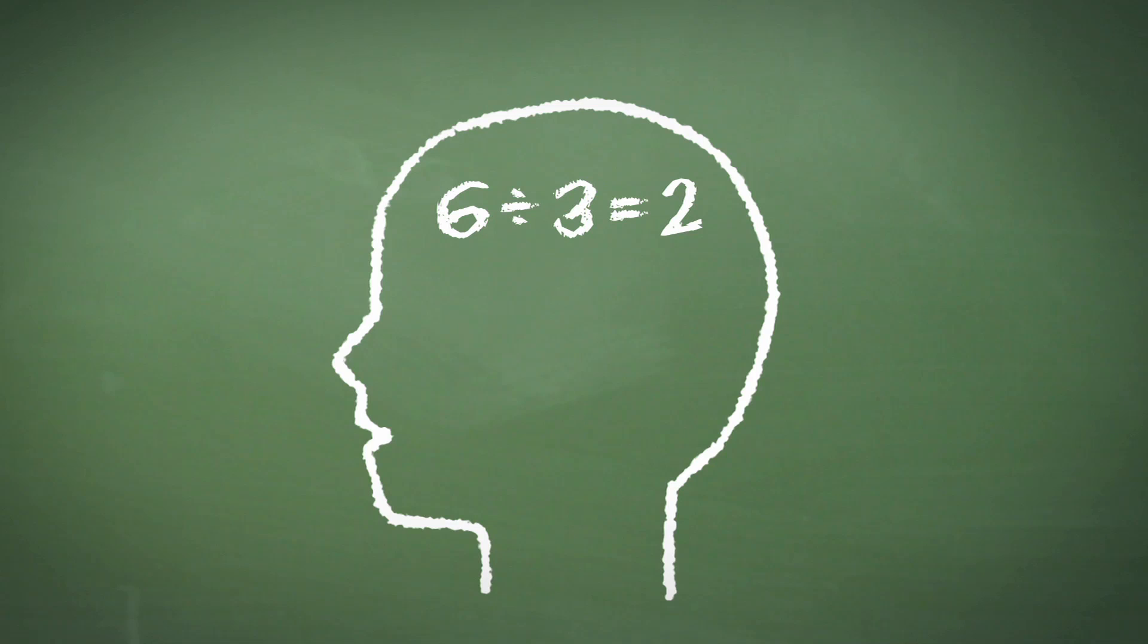With certain numbers, division can often be done in your head. For instance, you may know straight away that 6 divided by 3 equals 2, or 10 divided by 2 equals 5, or even that 300 divided by 100 equals 3.